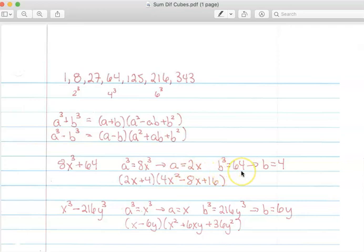My B cubed in this example is equal to 64, and the cubed root of 64 is 4.